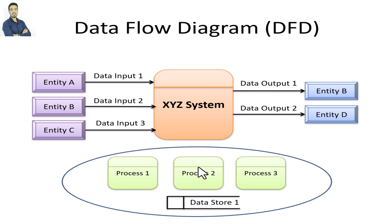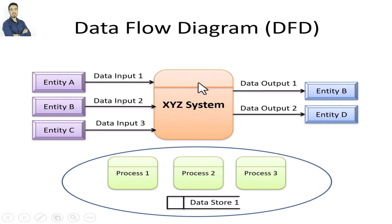After that we go to the level zero diagram. The level zero diagram is an explanation of what happened in the main process — it is the explanation of process zero.